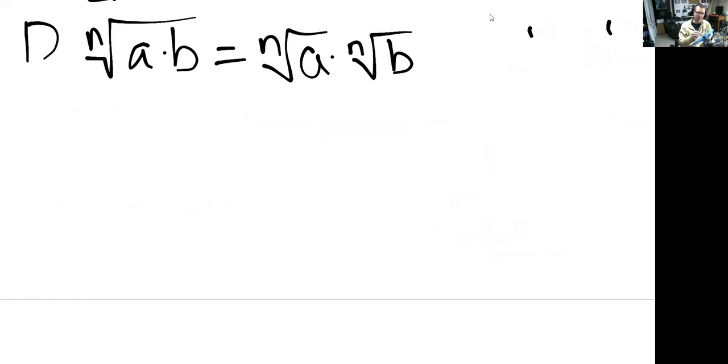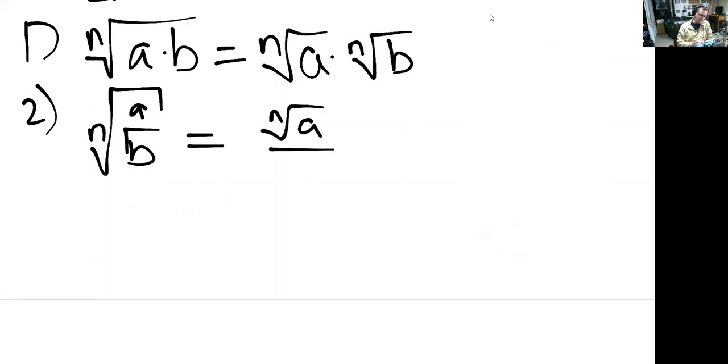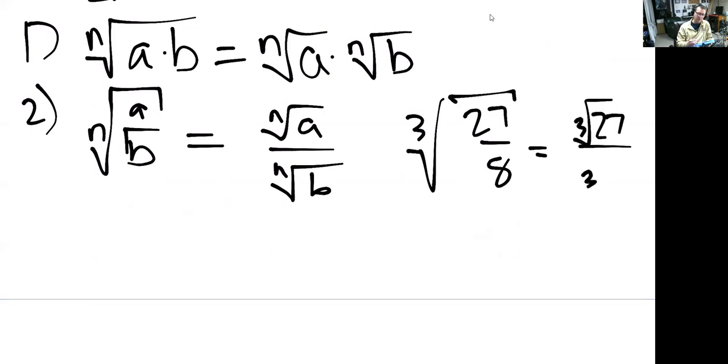So that's the first property. The next property is what to do with fractions in a root. So the nth root of this tall fraction, a over b, just like with exponentials, we're going to distribute this root. This is the nth root of a over the nth root of b. So as an example, third root of 27 over eight. That's the third root of 27 over the third root of eight. What number multiplied three times gives you 27? Three. And we already know the next one is two. So this is three halves.